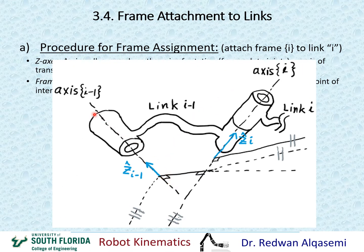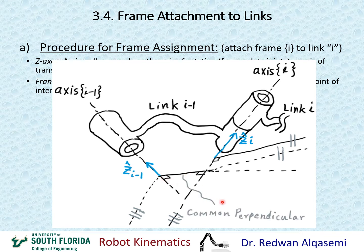Looking at our figure: this is axis I minus one, this is Z_i, and this is axis I. The common perpendicular between these two axes is this line. So this is one common perpendicular and this is another common perpendicular. That means the origin for frame I minus one is right at the intersection between axis I minus one and the common perpendicular with the next axis. And this point is the origin for frame I, the intersection between axis I and the common perpendicular between this axis and the next axis.